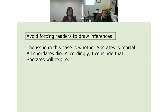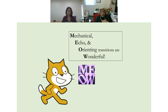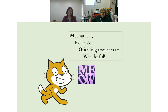The problem with too much expository writing — and especially in legal writing — is when we don't make connections for the reader. Here's an extreme case: 'The issue is whether Socrates is mortal. All chordates die. Accordingly, I conclude that Socrates will expire.' A reader would have to figure out that mortality, death, and expiring all relate to the same concept, and guess that Socrates is a chordate. So it's making the reader do all the mental connections. I know this is an incredibly cheesy acronym — too bad. Cheesy is memorable. Mechanical, Echo, and Orienting transitions are wonderful — MEOW.